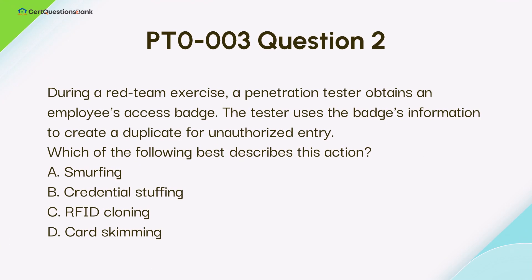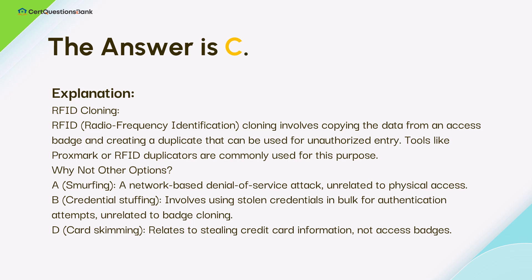During a red team exercise, a penetration tester obtains an employee's access badge. The tester uses the badge's information to create a duplicate for unauthorized entry. Which of the following best describes this action? A. Smurfing. B. Credential stuffing. C. RFID cloning. D. Card skimming. The answer is C, RFID cloning. RFID (radio frequency identification) cloning involves copying the data from an access badge and creating a duplicate that can be used for unauthorized entry.